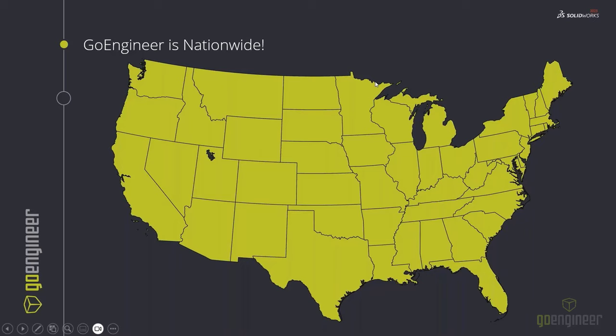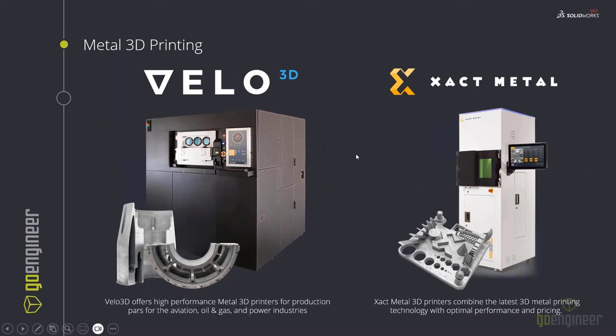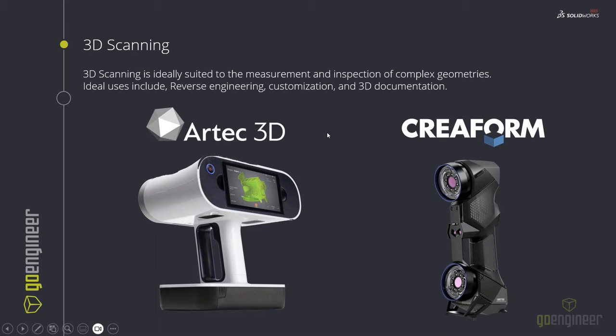Our Stratasys printer line — if you haven't jumped into some of the new cutting-edge technology, we have a lot of that information online at GoEngineer.com, as well as our newer metal printers: the LO3D, a very high-end metal printer, and Exact Metal for lower-price metal solutions. These metal printers are really good for tooling applications such as inserts for injection mold tools. In addition, we have scanning solutions for large-format and high-accuracy smaller-format scanners. You can go to GoEngineer.com for any of that.